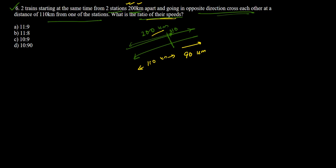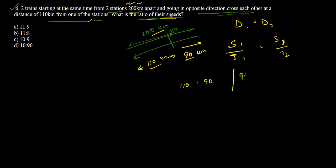Since both trains travel the same total time to meet, and the distances covered are different, the ratio of their speeds equals the ratio of their distances. Speed is directly proportional to distance when time is constant. Therefore the ratio of their speeds is 110 to 90, which simplifies to 11 to 9 — or conversely 9 to 11 depending on which train we consider first.